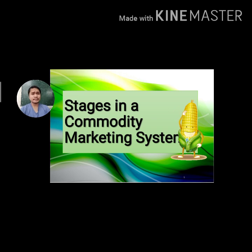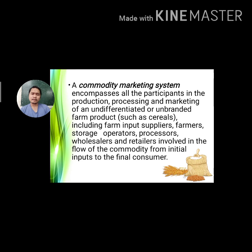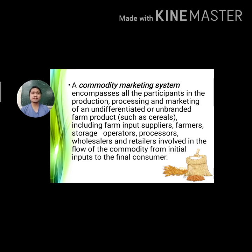What are the stages in a commodity marketing system? First, what is a commodity marketing system? A commodity marketing system encompasses all participants in the production, processing, and marketing of an undifferentiated or unbranded farm product such as cereals. It includes farm input suppliers, farmers, storage operators, processors, wholesalers, and retailers involved in the flow of the commodity from initial inputs to the final consumer.